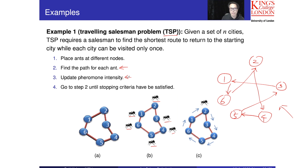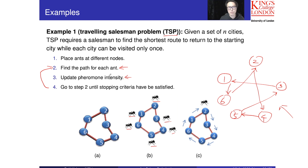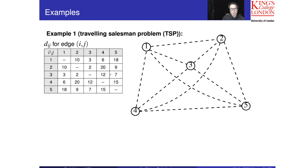After finding the path for each ant, we update the pheromone intensity through negative feedback and positive feedback, then repeat this process until the algorithm meets the stopping criterion.